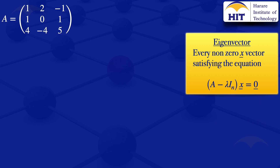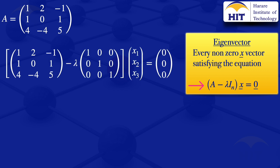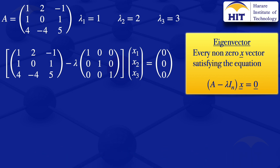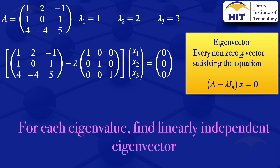When we substitute our A and the 3 by 3 identity matrix into that equation, we get the matrix A minus lambda multiplied by the identity matrix, multiplied by the column vector x, equals the zero vector. In a previous tutorial, we obtained that the eigenvalues of matrix A were lambda 1 equals 1, lambda 2 equals 2, and lambda 3 equals 3. For each of the 3 eigenvalues, we have to find the linearly independent eigenvectors.